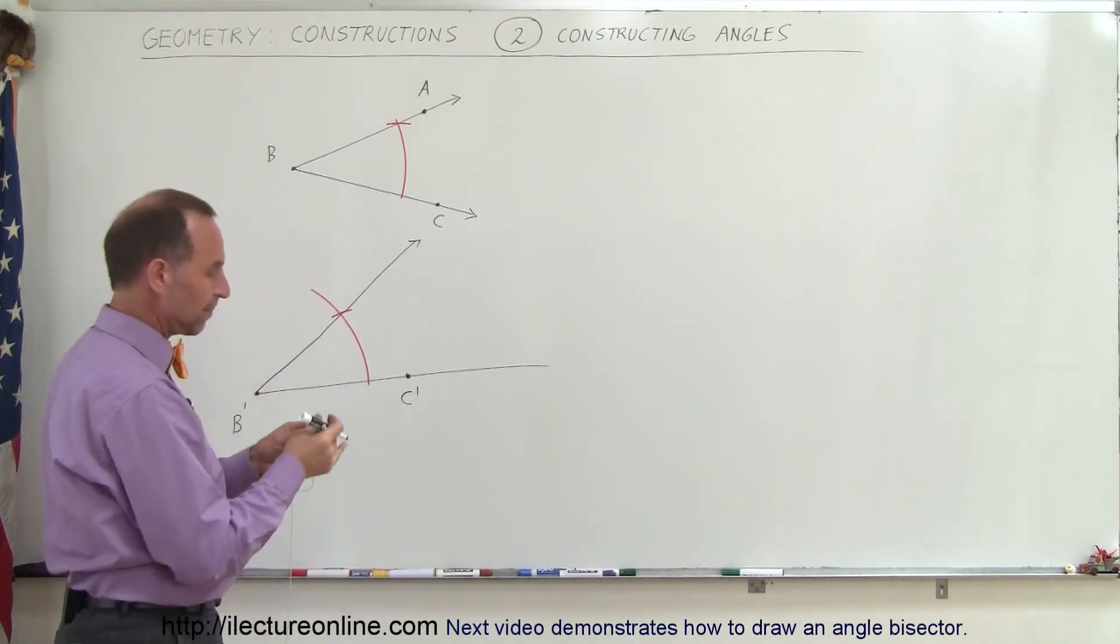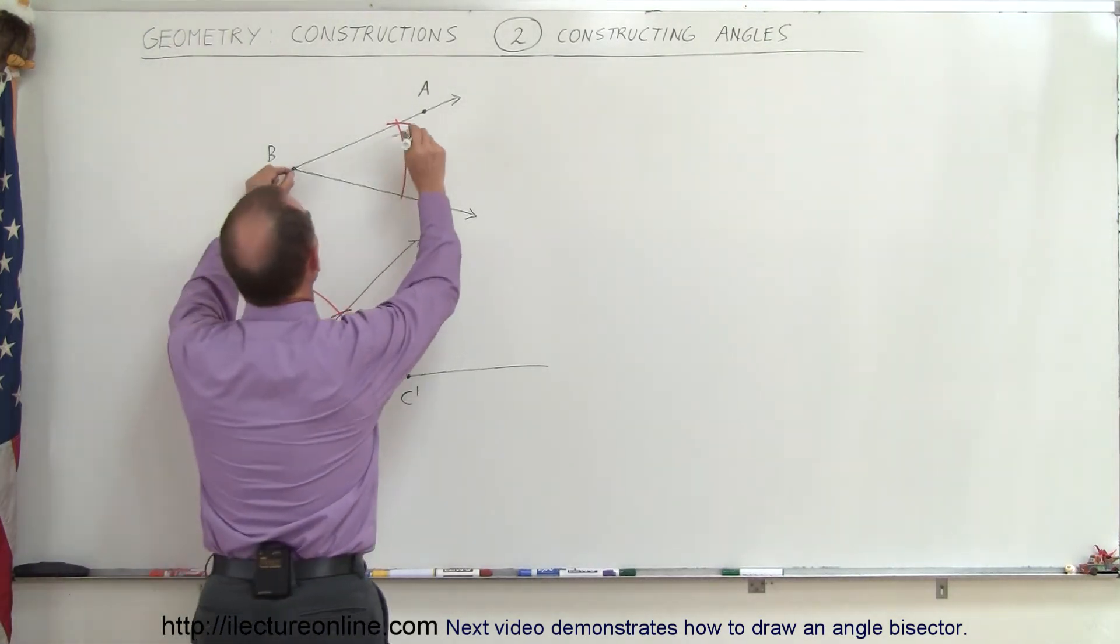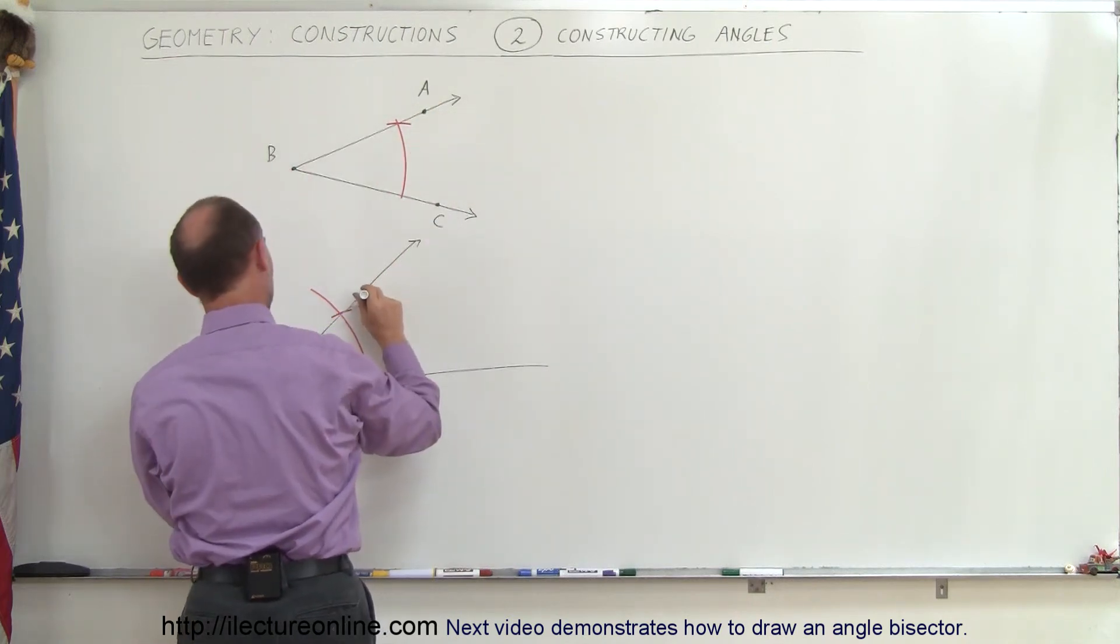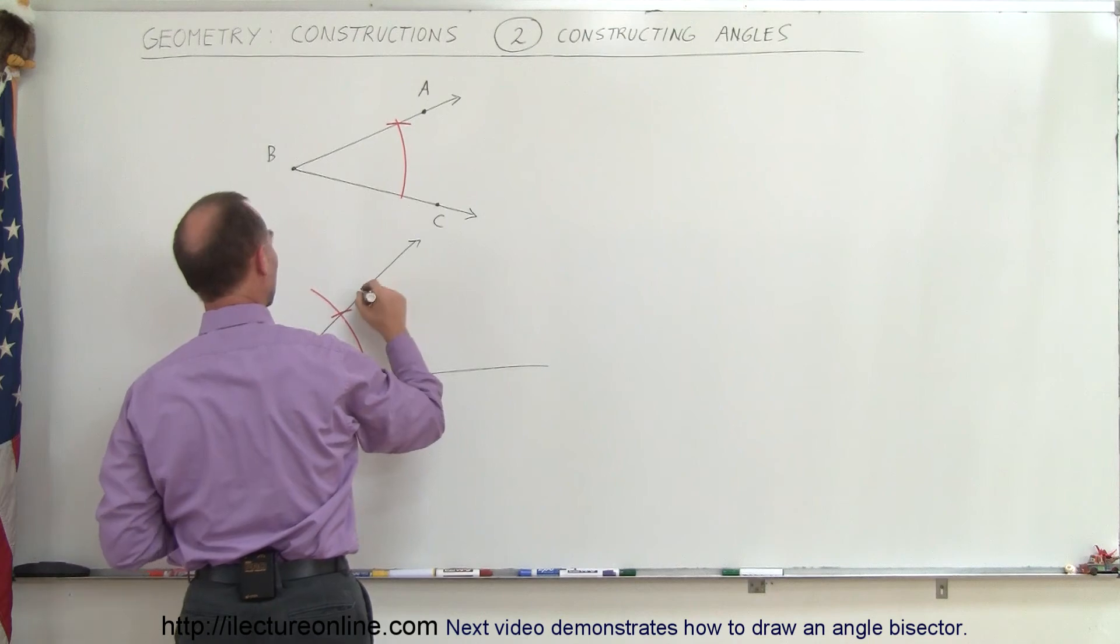I can find my A' by finding out the distance from B to A like there, and I can find my distance from B' to A', which is right there. So there's my A'.